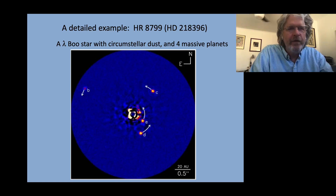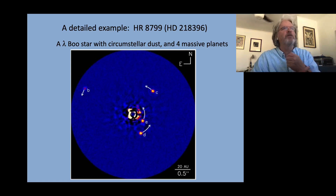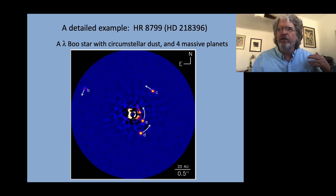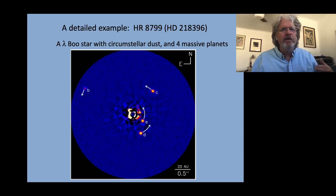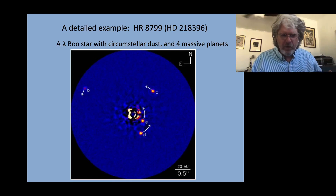We're going to use spectroscopy. We're going to look at different transitions from electrons of different elements and different excitation states, and we're going to think about how much absorption I see from this element with its electron in this excitation state doing this transition. How much absorption do I see?